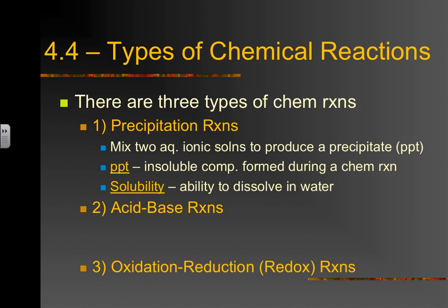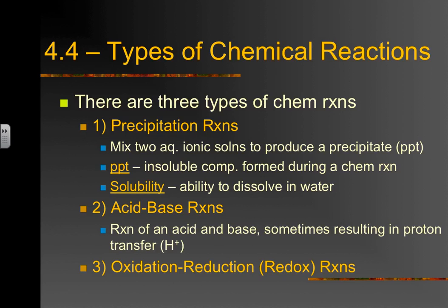Precipitation reactions are reaction type number one. Acid-base reactions are very simply reactions between an acid and a base — they usually involve the transfer of a proton or hydrogen ion. Oxidation-reduction reactions result in electrons being transferred; when you talk about oxidation and reduction, you're generally talking about electricity, which has to do with electrons. Numbers two and three will come later — right now, precipitation reactions.